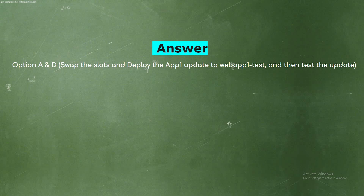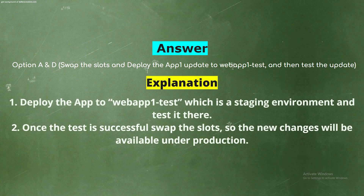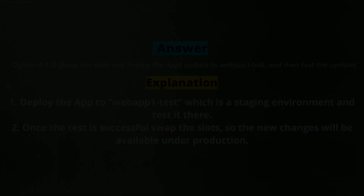Swap the slots, and deploy the App1 update to Web App 1 test, then test the update. Explanation: Deploy the app to Web App 1 test, which is a staging environment, and test it there. Once the test is successful, swap the slots so the new changes will be available under production.